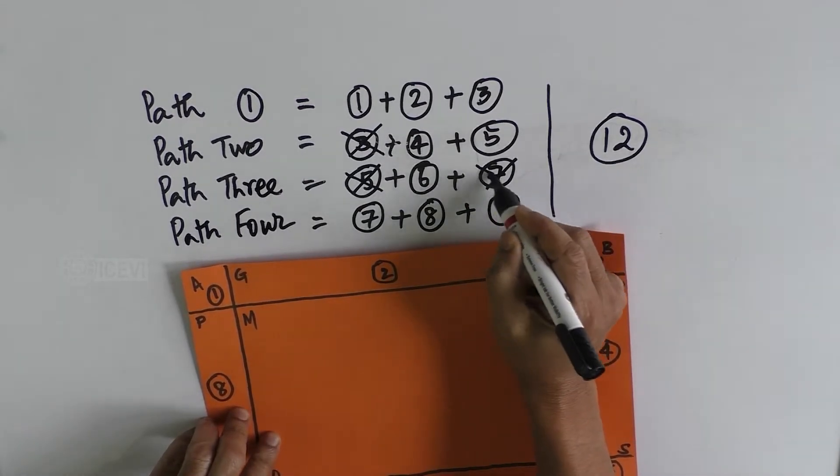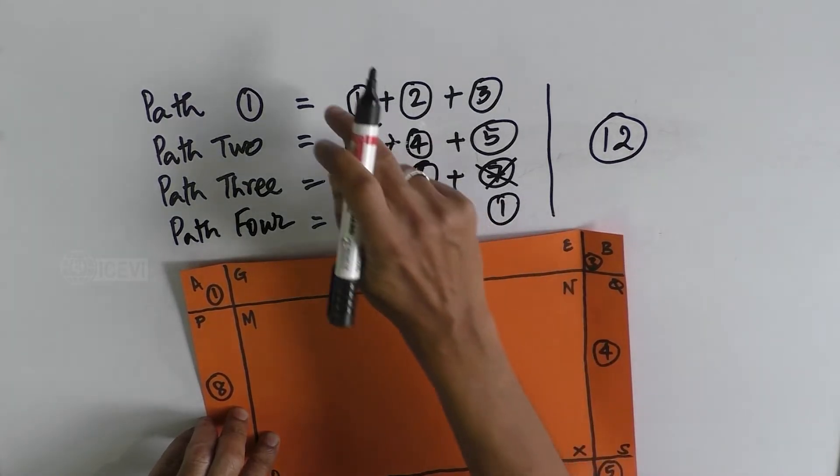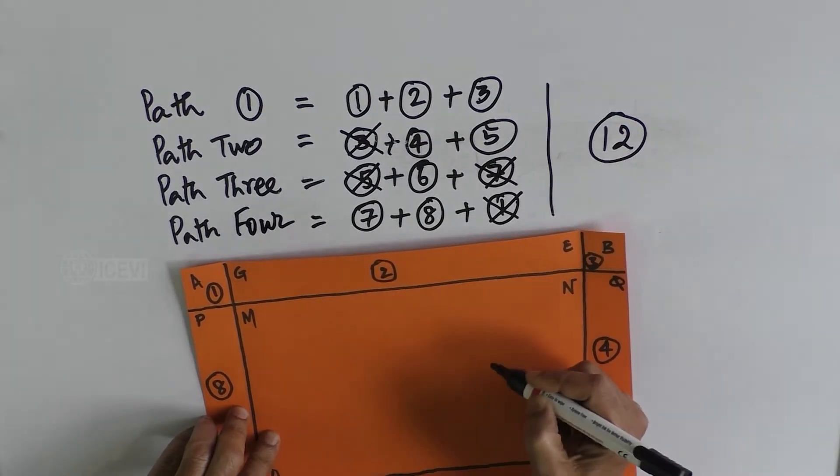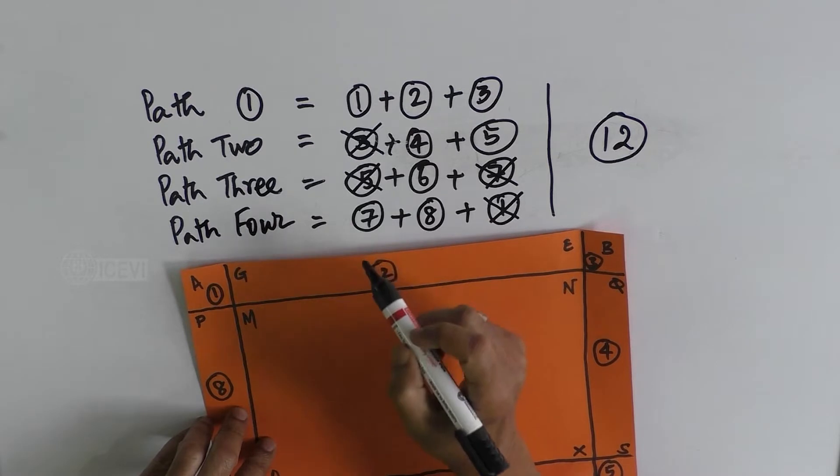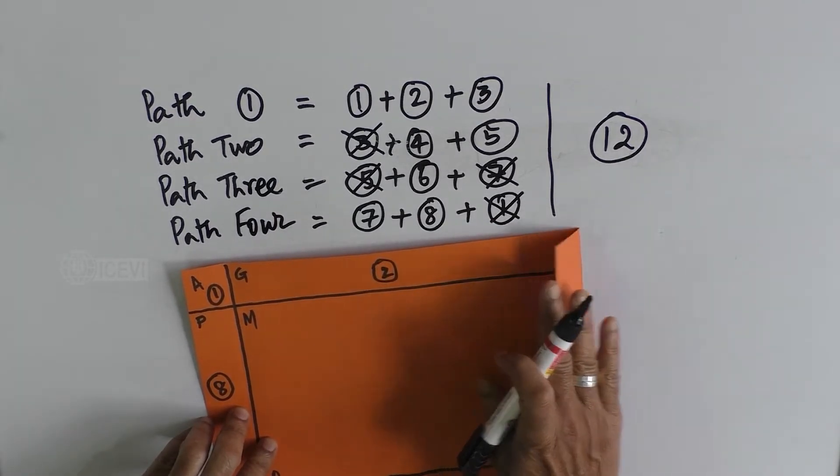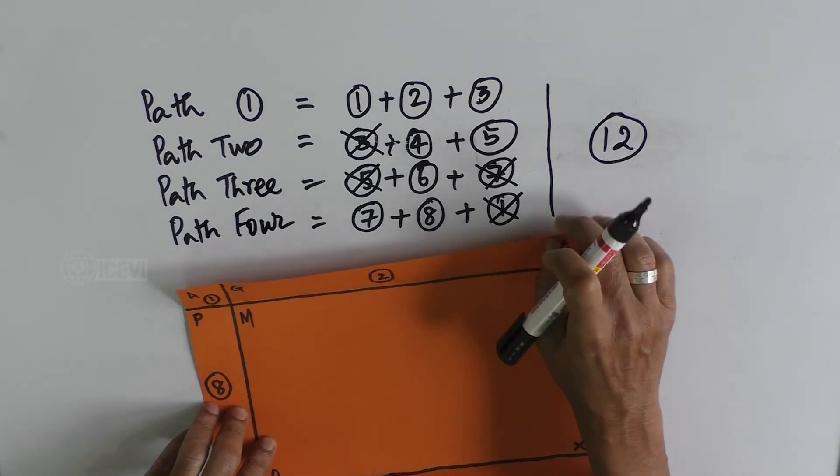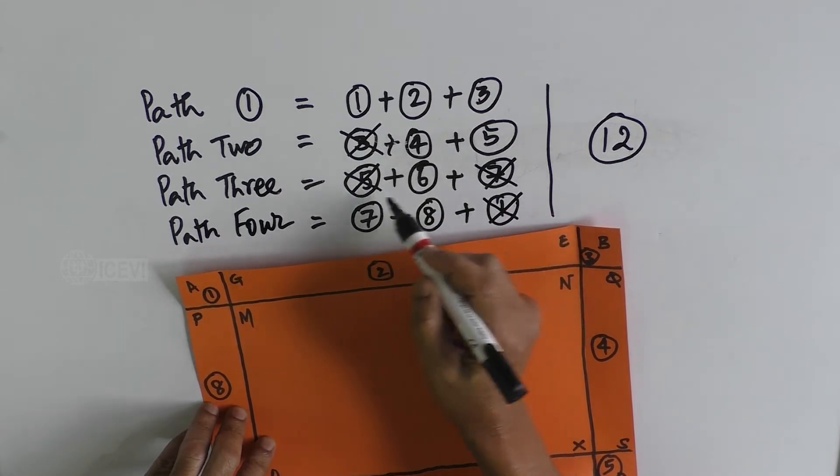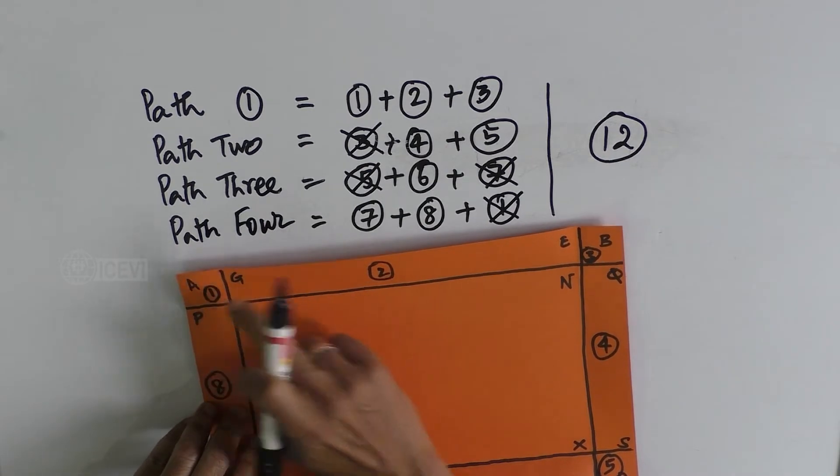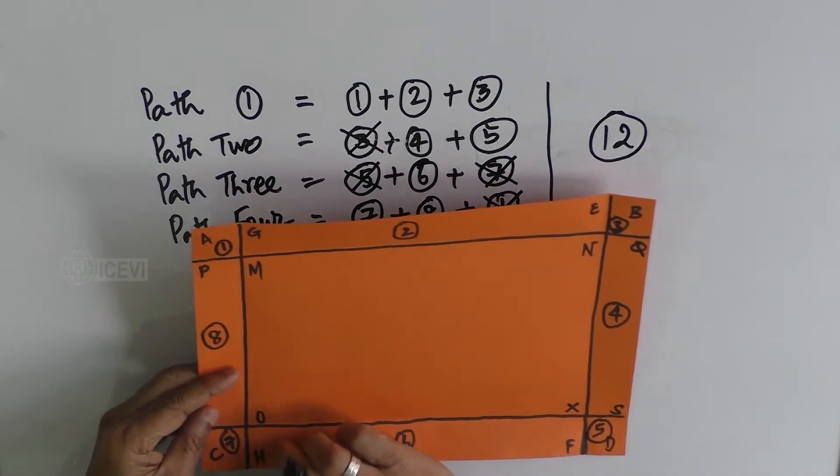When you go to the fourth path, you delete the seven and then start with seven and eight. One is already included in path one, so you have to delete that. So the child should understand that as independent paths, you are taking the corner squares. When you add them together, the overlapping of the corner squares must be deleted.